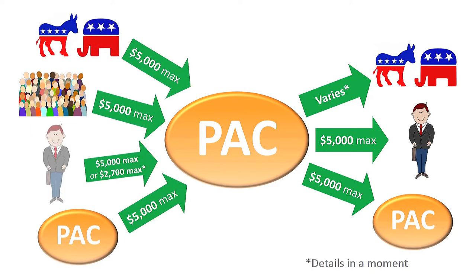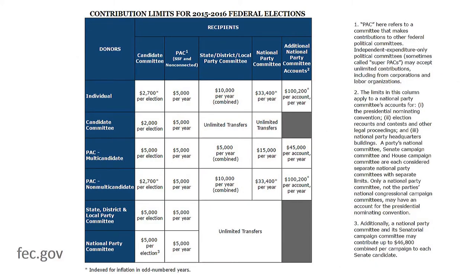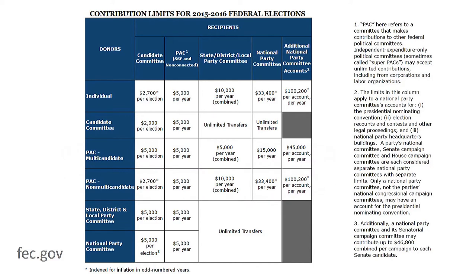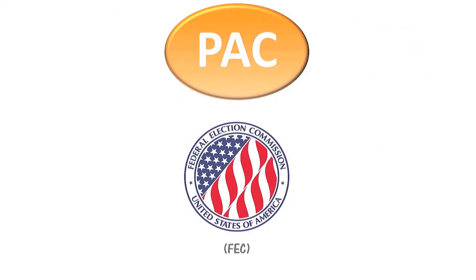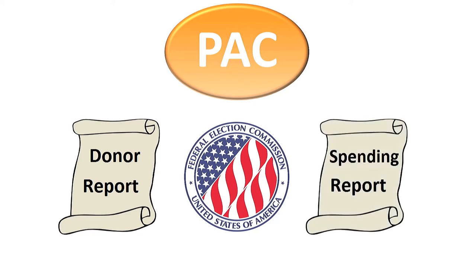Individuals, candidate committees, party committees, and even PACs can make limited contributions to a PAC per election. This chart from the Federal Election Commission's website shows more details on donors and recipients. Donation limits for how much a multi-candidate PAC and a non-multicandidate PAC can give to each category appear horizontally, and limits for how much a PAC can receive from each category appear vertically. PACs must register with the Federal Election Commission and report the names of their donors and account for their spending on a quarterly or monthly basis.